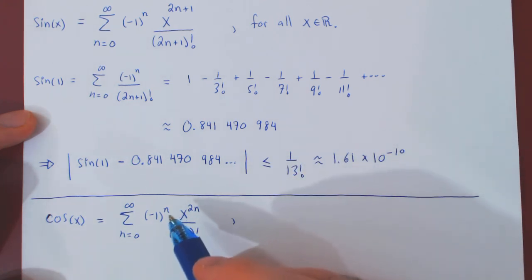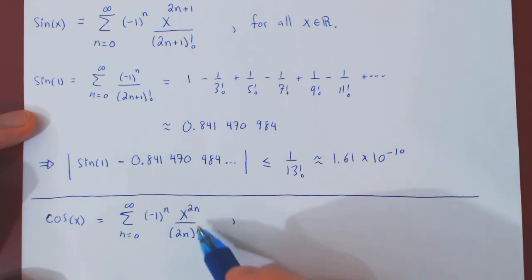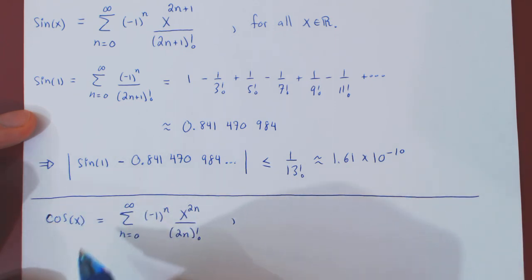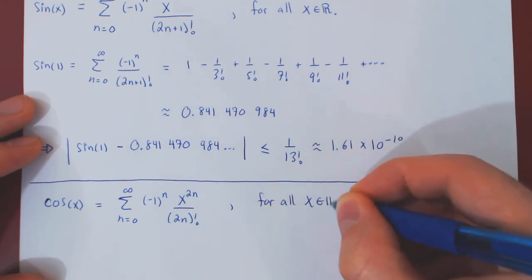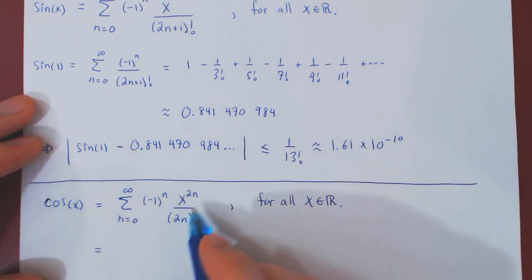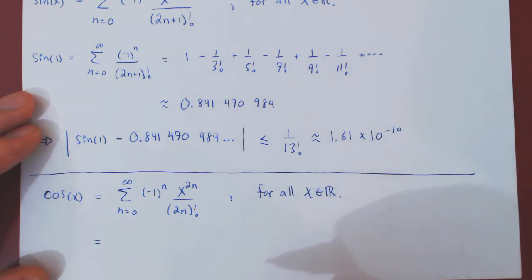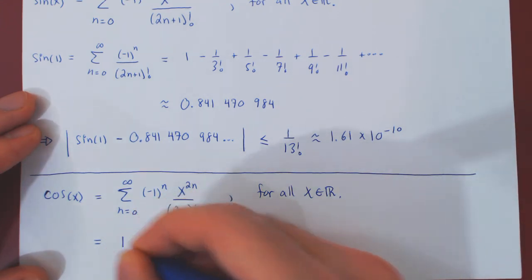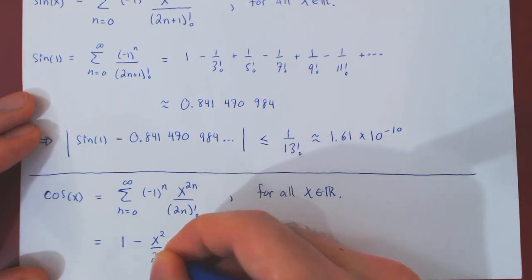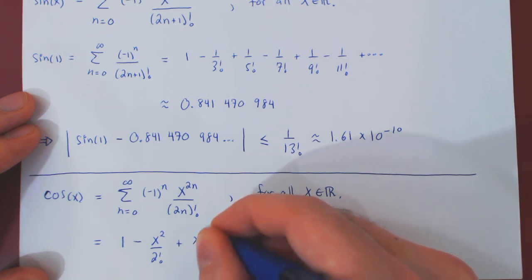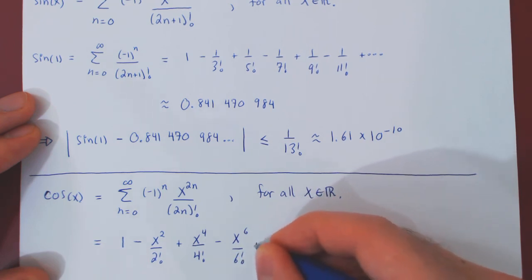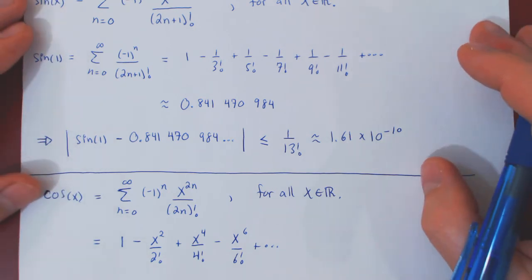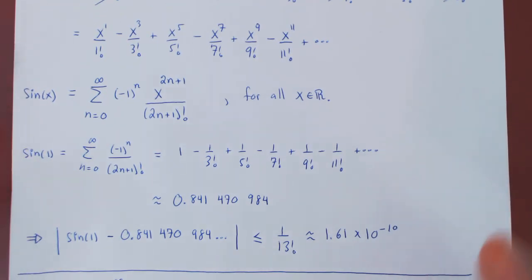This power series converges for all values of x using the ratio test, and because cosine of x is a nice function, it equals its Maclaurin series for all values of x. Expanding the first few terms gives: 1 minus x squared over 2 factorial, plus x to the 4 over 4 factorial, minus x to the 6 over 6 factorial, and so forth.